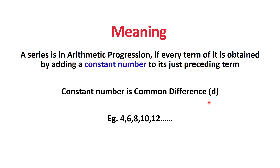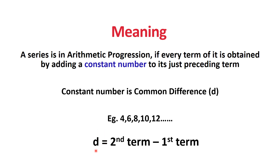If this constant number is the difference between each term in the series, such a series is said to be in Arithmetic Progression. We can find the constant number D from a series using the formula: second term minus first term. We can also subtract the second term from the third term and get the same D. That is how we find D, or the common difference, and determine whether a series is in Arithmetic Progression.